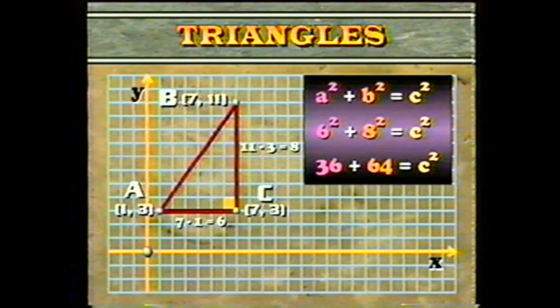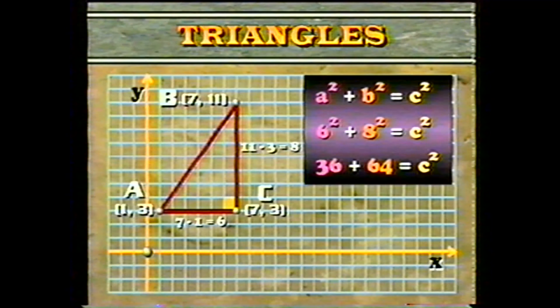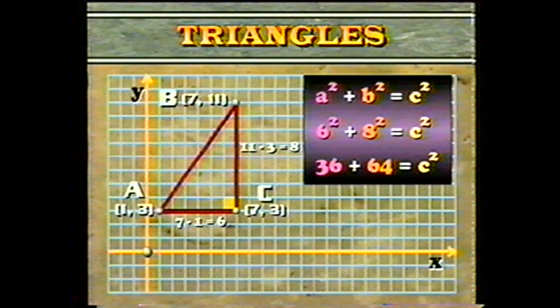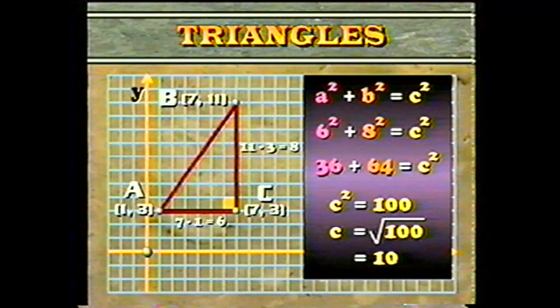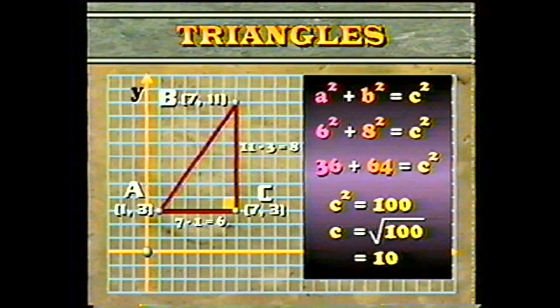Using our formula, A squared plus B squared equals C squared, we have 6 squared plus 8 squared equals C squared. 36 plus 64 equals C squared, so C squared equals 100. Then the length of AB is the square root of 100, which equals 10.